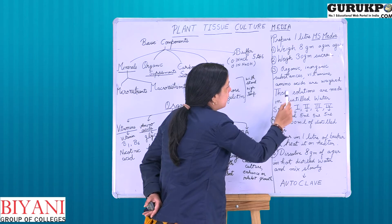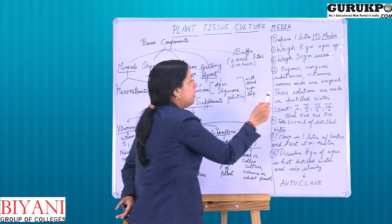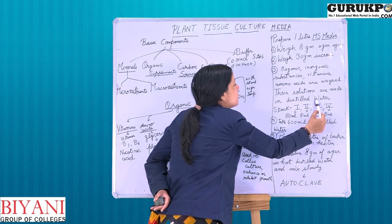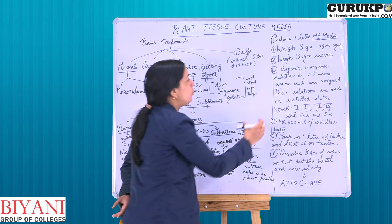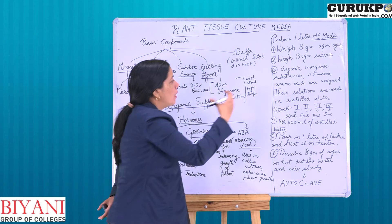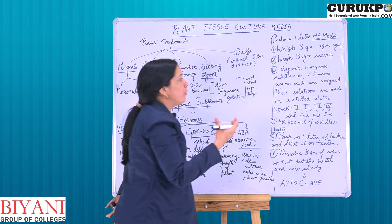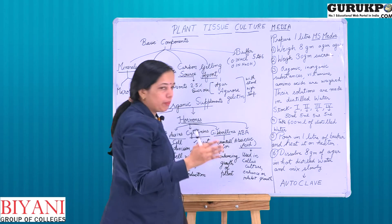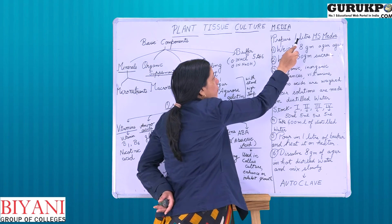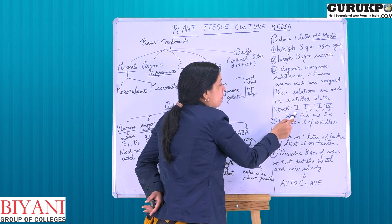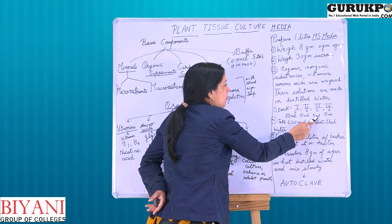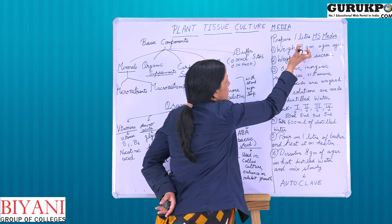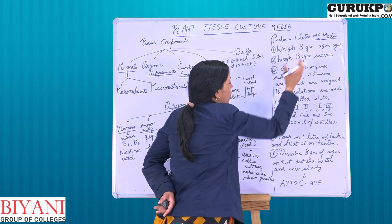After weighing all components, we prepare a solution by mixing them in distilled water. Some salts go into one stock solution, some salts, vitamins, and amino acids into another, and organic components into another. We prepare four stock solutions in total. For preparing one litre of media, we take 50 ml of stock one, 5 ml of stock two, 5 ml of stock three, and 5 ml of stock four, along with the weighed agar agar and sucrose.